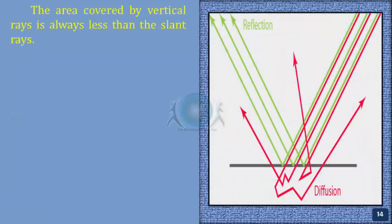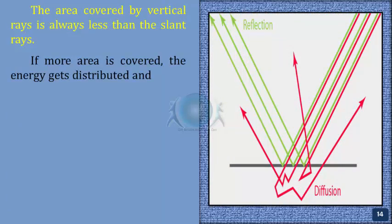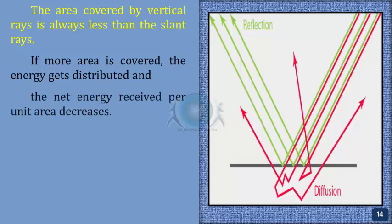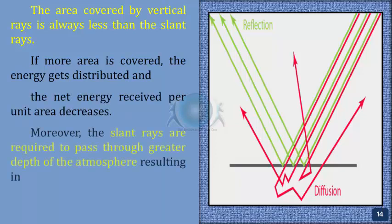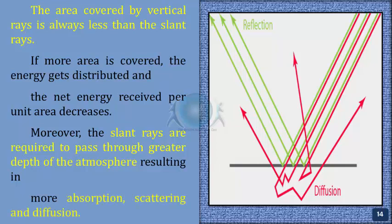The area covered by vertical rays is always less than the area covered by slant rays. If more area is covered, the energy gets distributed and the net energy received per unit area decreases. Moreover, the slant rays are required to pass through greater depth of the atmosphere, resulting in more absorption, scattering, and diffusion.